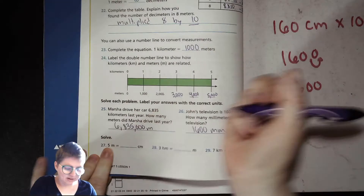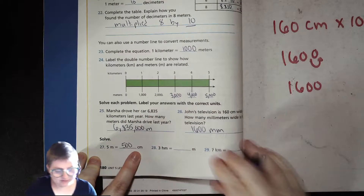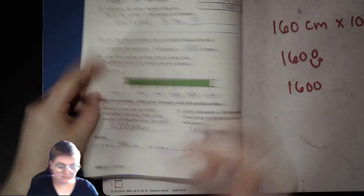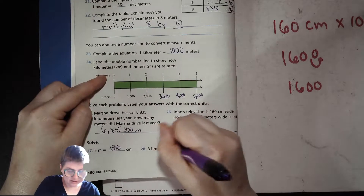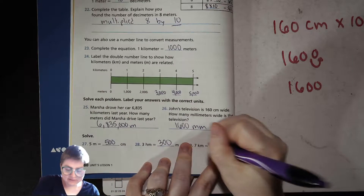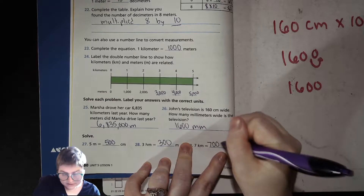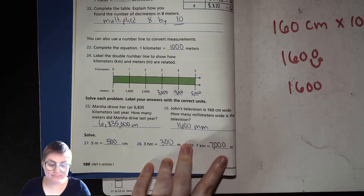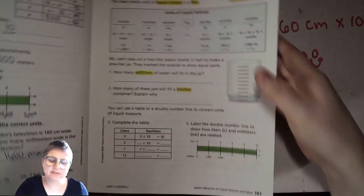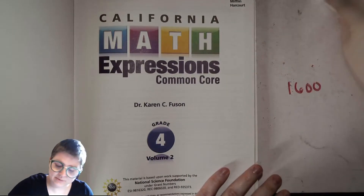A few more conversions: 5 meters is 500 centimeters; 3 hectometers — that's 100 meters in one hectometer — is 300 meters; and 7 kilometers is 7,000 meters. I know it's a lot, but you're going to get the hang of it. When it's new it's a little tricky, but you'll be fine. All right, I will see you next time — thanks for joining me, bye!